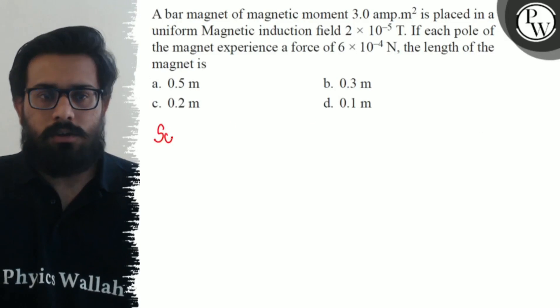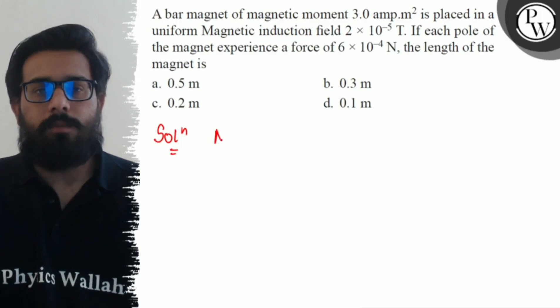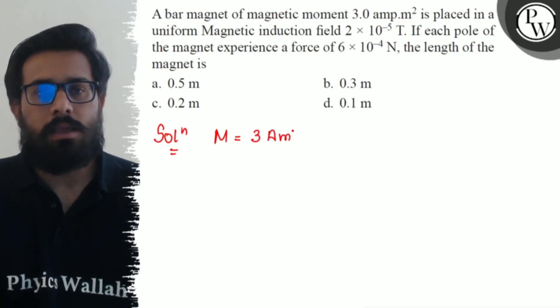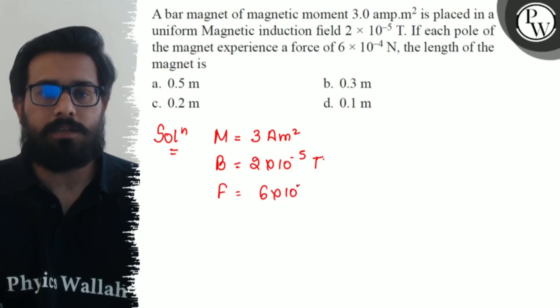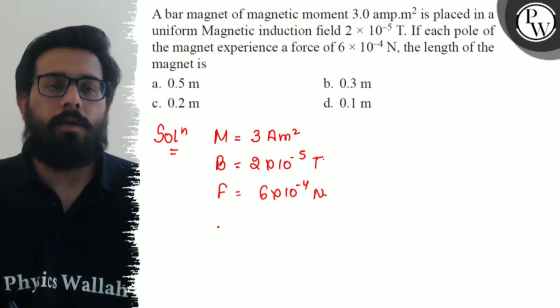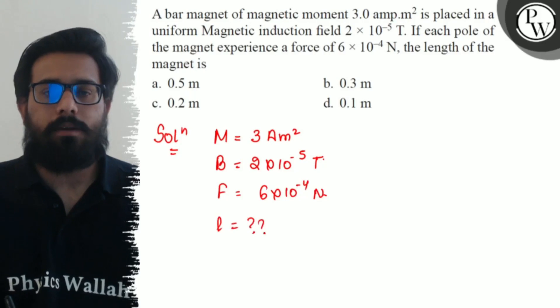So here in this question, we have magnetic moment as 3 ampere meter square. The value of the magnetic field is 2×10⁻⁵ tesla. And it is experiencing a force of 6×10⁻⁴ newton. We need to find out the length of the magnet.